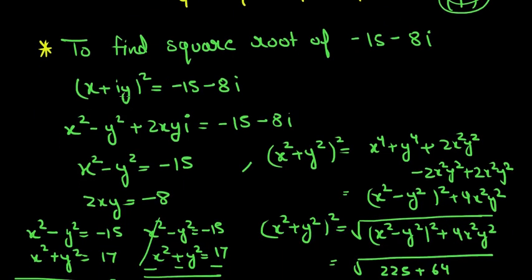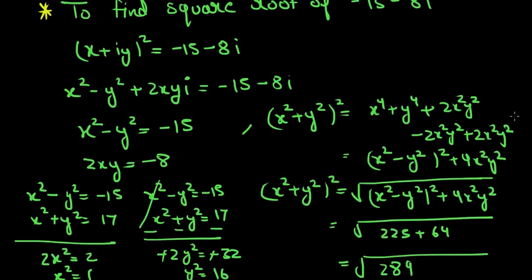Expanding (x + iy)² using (a + b)² gives x² − y² + 2xyi = −15 − 8i, since i² = −1. Equating real and imaginary parts: x² − y² = −15 and 2xy = −8. We now need x² + y² so we can solve for x and y individually.